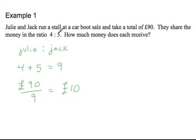So we've already said that Julie to Jack, the ratio is 4 to 5. And so we can figure out what Julie's take is. She has 4 parts out of the total of 9 that are here. 4 plus 5 is 9. So she has 4 out of the 9. Well, there's 10 pounds per part.